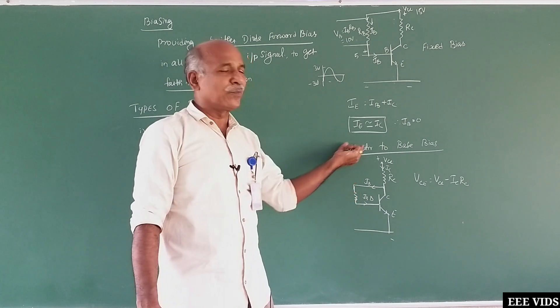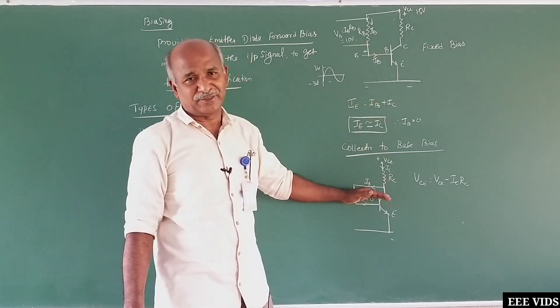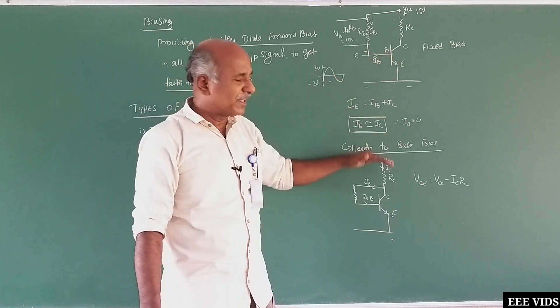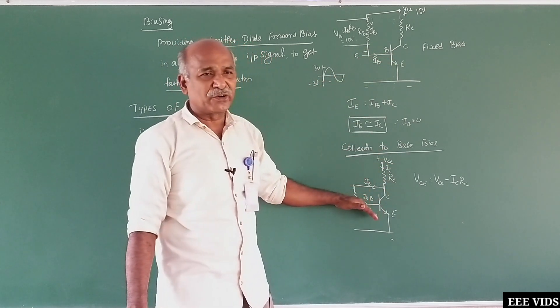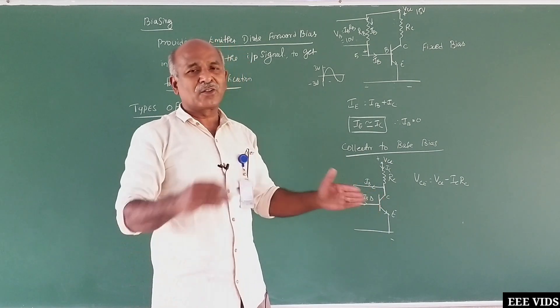This is not fixed bias. This is collector to base bias, this is not fixed bias. This is fixed voltage. Here, the collector has less potential. The potential is there.